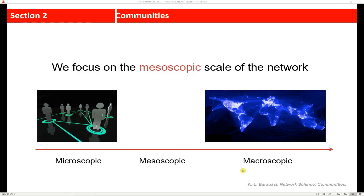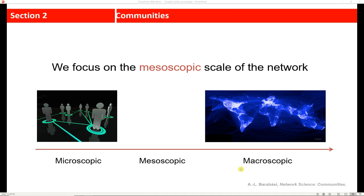Communities fall on the mesoscopic spectrum. So somewhere in between the microscopic and the macroscopic, just right in the middle. So not at the individual level and not at the high level, but right in the middle. And communities have a property of connectedness. And so a community corresponds to what we call a connected subgraph.